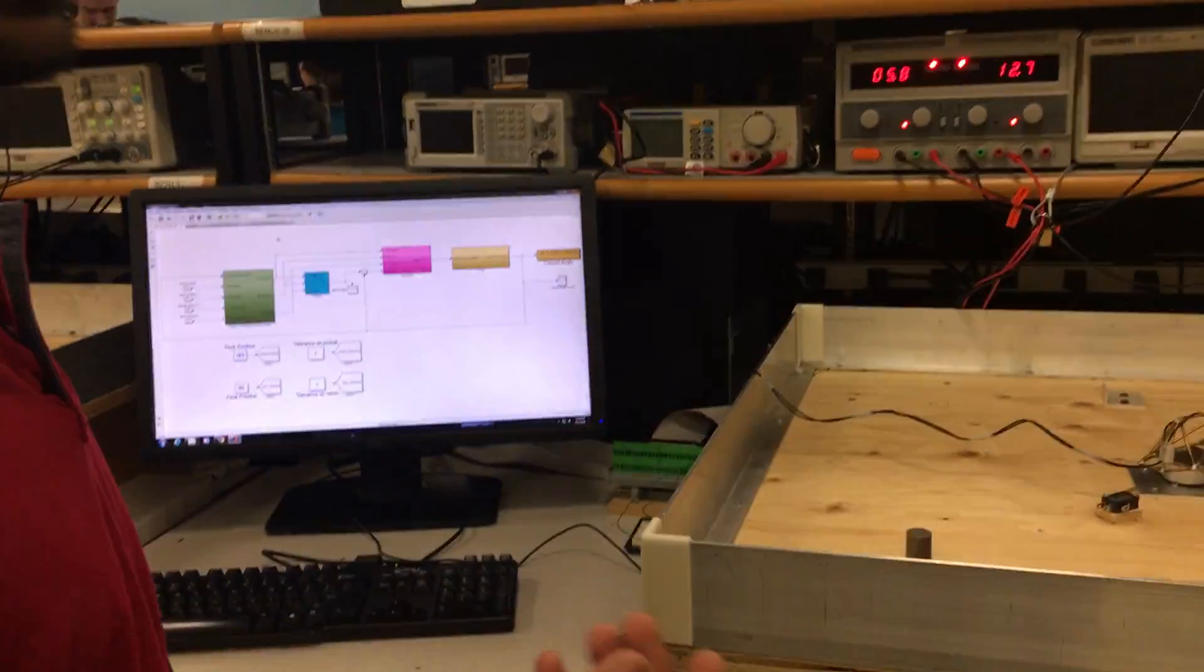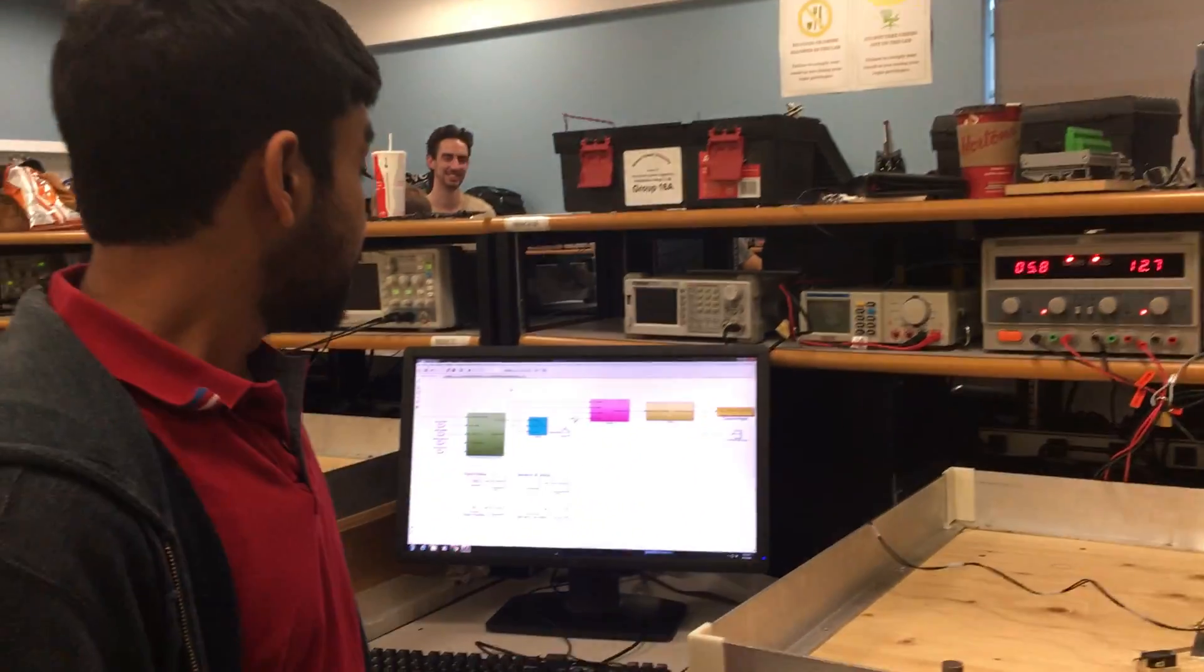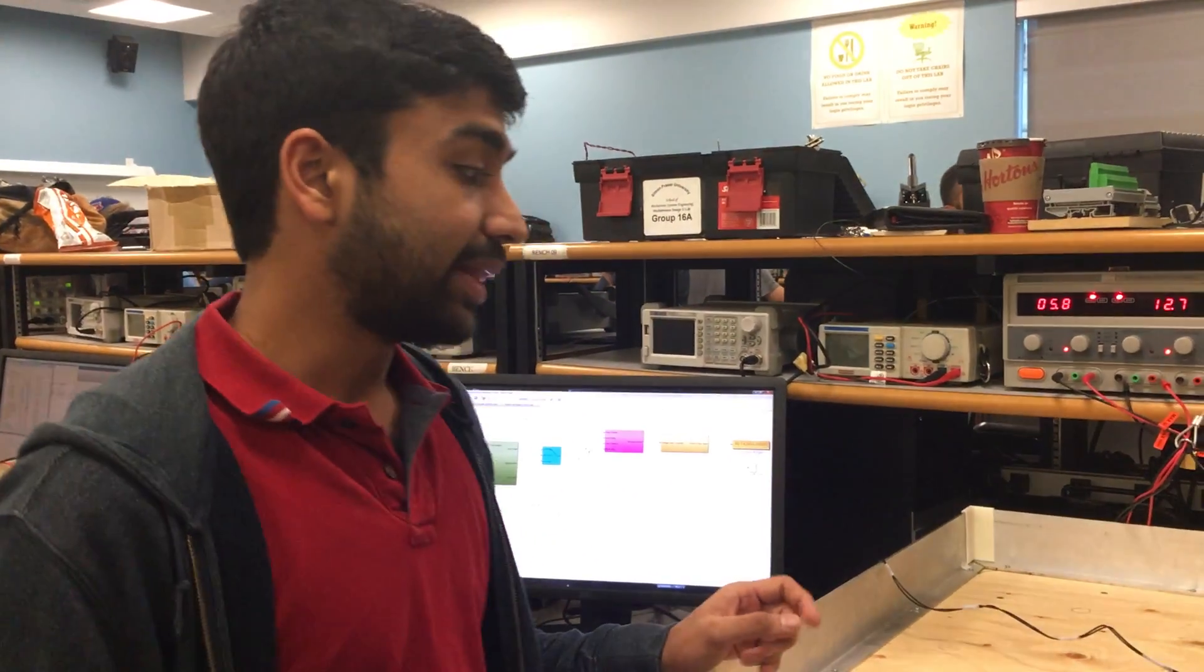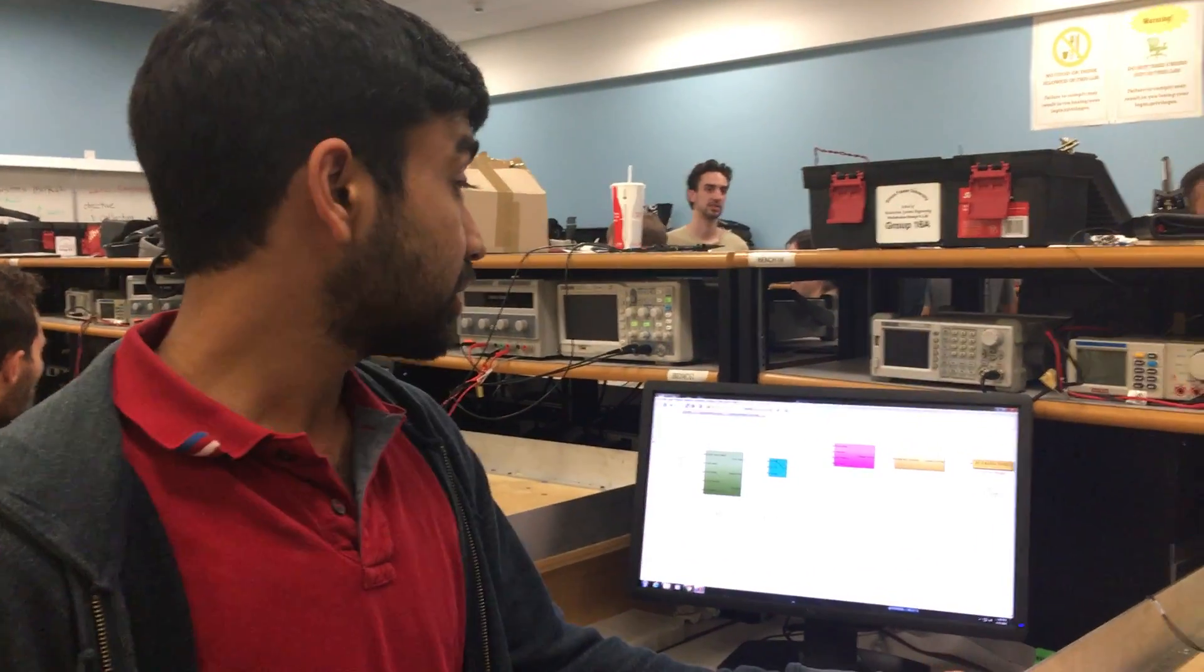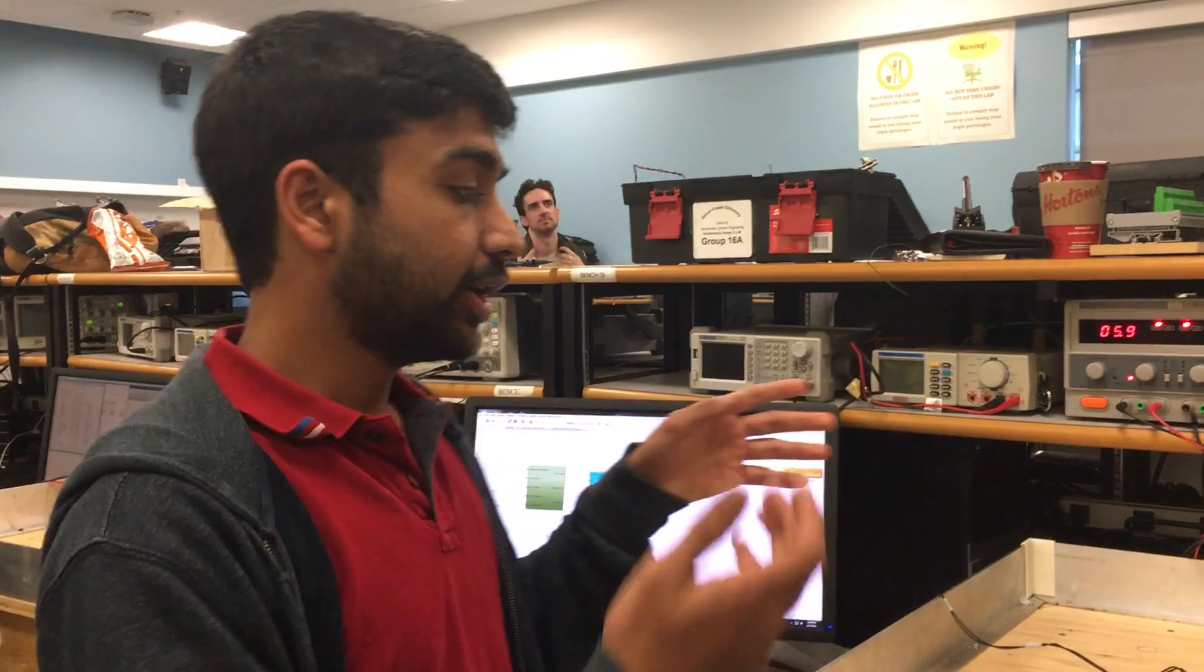Once the electrical part was complete, we designed the system on Simulink to make a control system and simulate the project. It was done to see if we can estimate the PID control values that we would need. Then once we had the control system ready, we integrated the three parts of the project together to make the system.